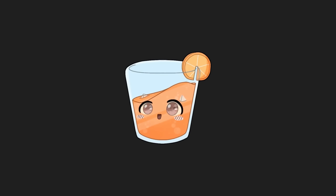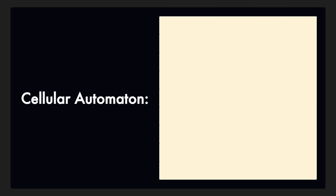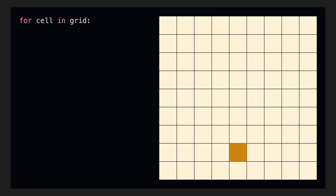Before we can optimize the hell out of this project, we first need to understand exactly how it works. The algorithm for falling sand is a type of algorithm called the Cellular Automaton. Essentially, that just means that every grain of sand is a cell in a grid that has a predefined rule set that tells it how to behave. Famously, to make sand, you only need three rules.